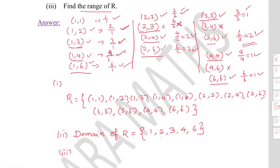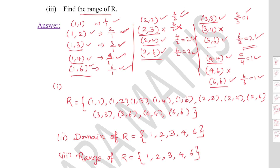The range of R is the set of all second elements of the ordered pairs. Collecting all second elements: from (1,1),(1,2),(1,3),(1,4),(1,6) we get 1,2,3,4,6; from (2,2),(2,4),(2,6) we get 2,4,6; from (3,3),(3,6) we get 3,6; from (4,4) and (6,6) we get 4 and 6. So range = {1, 2, 3, 4, 6}.